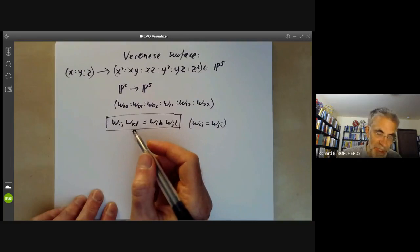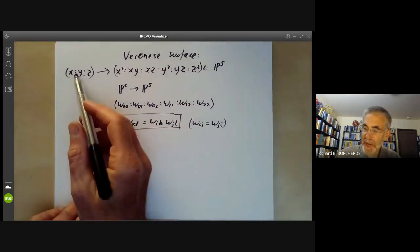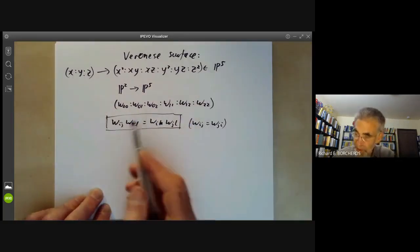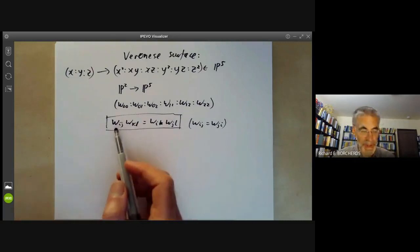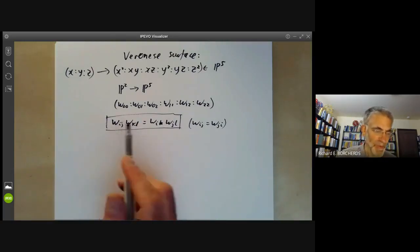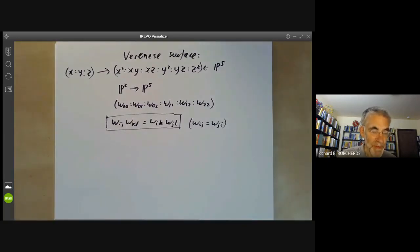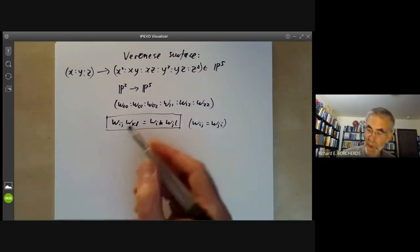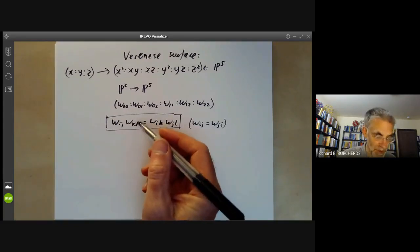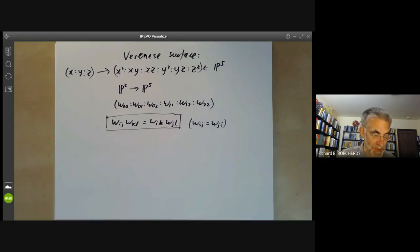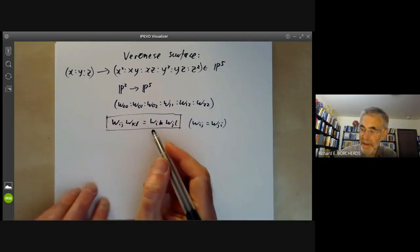You can check the map from P2 to the set of points satisfying all these equations is onto. The proof is similar to the way we showed the map from P1 times P1 to something was onto. It's similar to the example we're going to give next of lines in space. So I won't actually give the details of this.